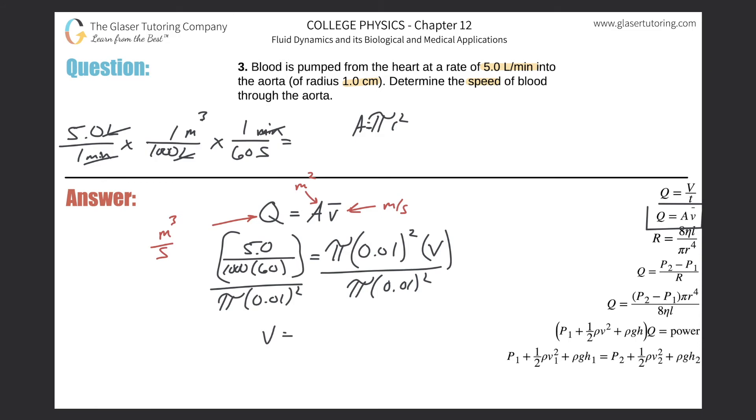get the velocity. Not bad, just a bunch of steps. 5 divided by parenthesis 1000 times 60 close parentheses, then divide by pi multiplied by 0.01 squared. We have a value of 0.265.